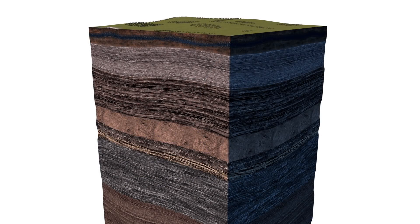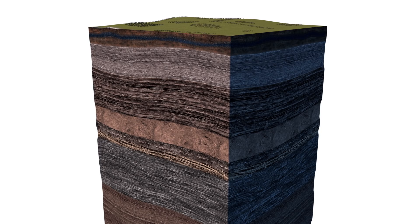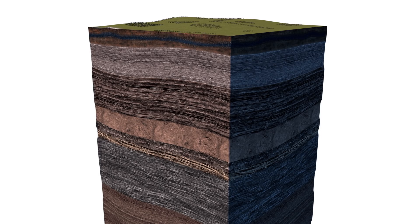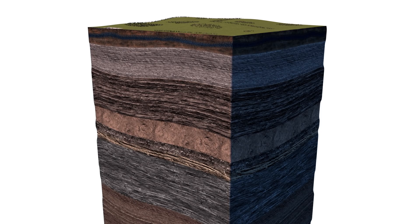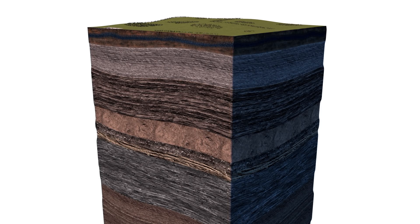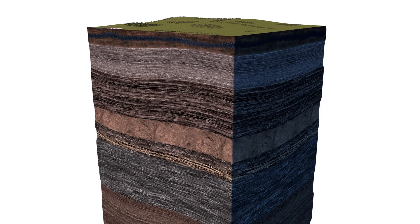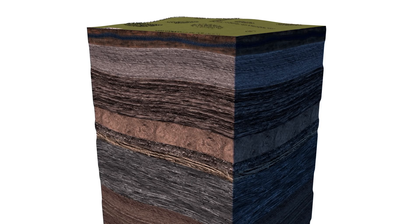Burying the spent fuel assemblies deep in the ground provides permanent protection from the long-lived radioisotopes that can be harmful for up to a million years. To ensure protection, we bury the spent fuel in rock far below the water table and where liquids have been out of contact with the surface from hundreds of thousands to millions of years.